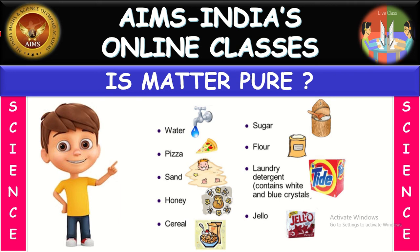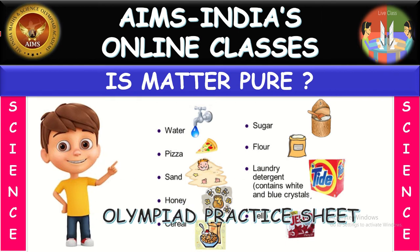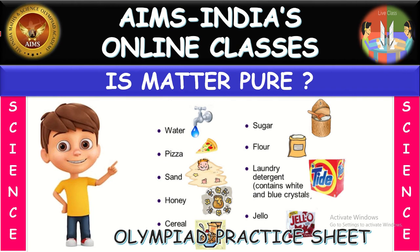Hello students, welcome to AIMS India online classes. This is a science session. Here we are discussing the 'Is Matter Pure?' chapter. In earlier sessions we have seen how matter is classified, what are pure substances and impure substances, different kinds of mixtures, types of mixtures, and how to separate these mixtures. Now we are going to see a practice sheet — a well-structured practice sheet related to this chapter.